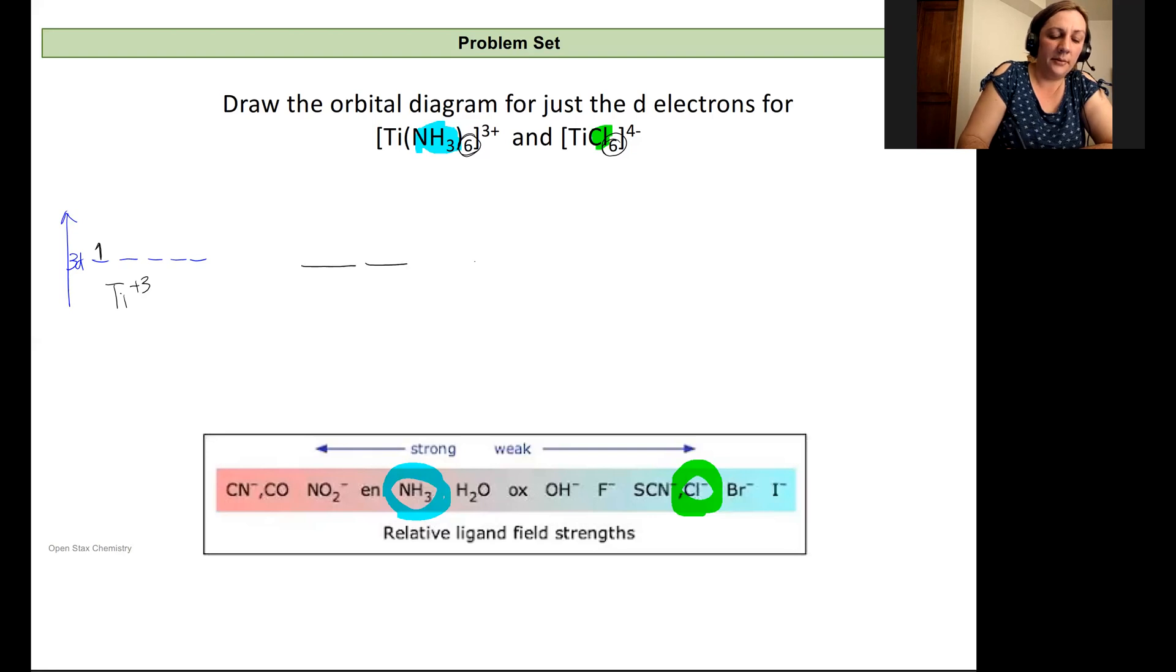We'll have it split into three lower energy and two higher energy. And so these higher energy ones correspond to the dz squared, the dx squared minus y squared. And the other ones are dxy, dxz, and dyz.